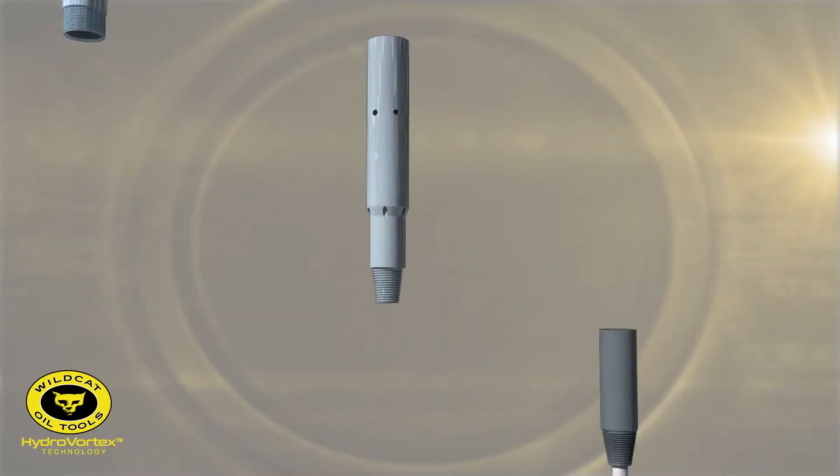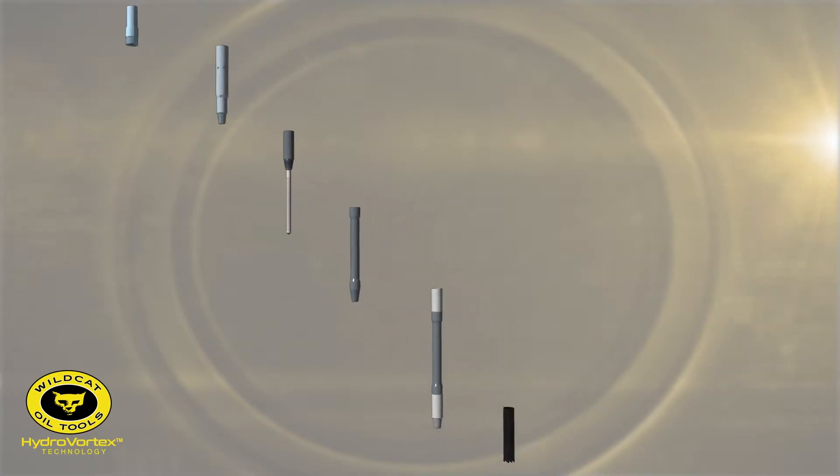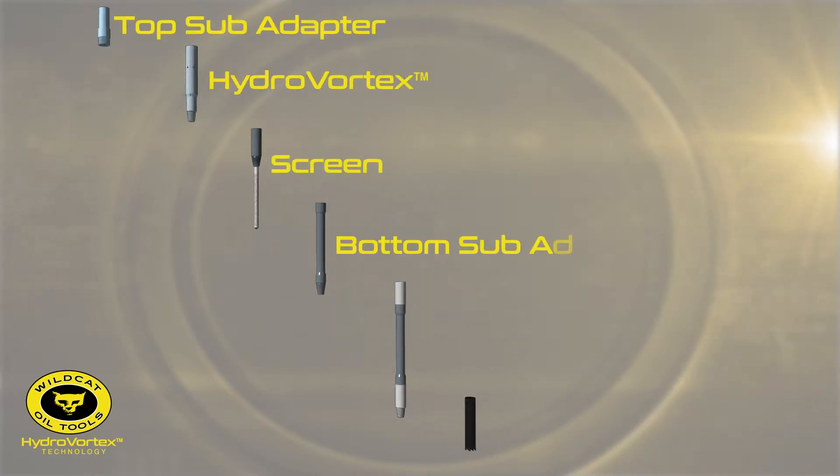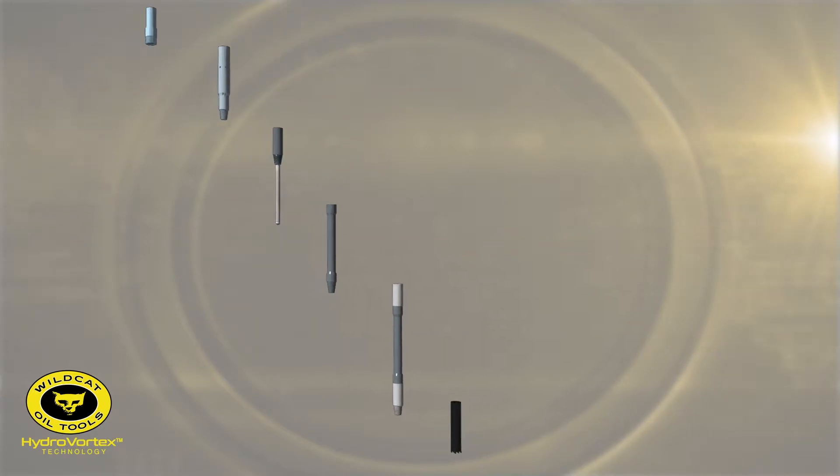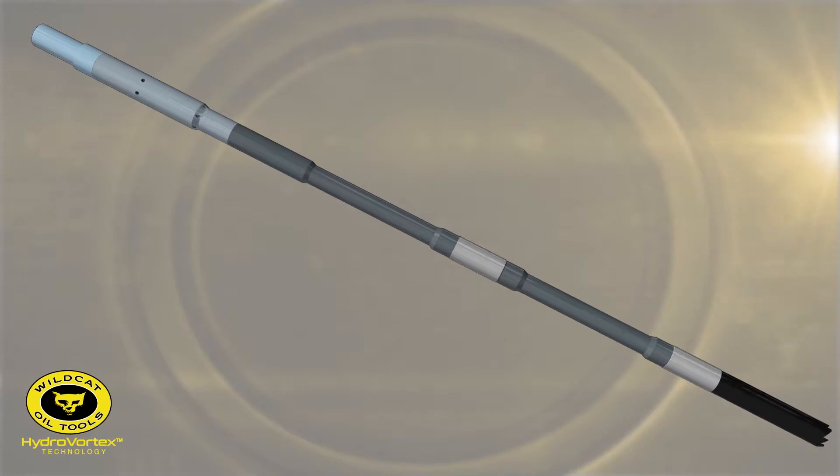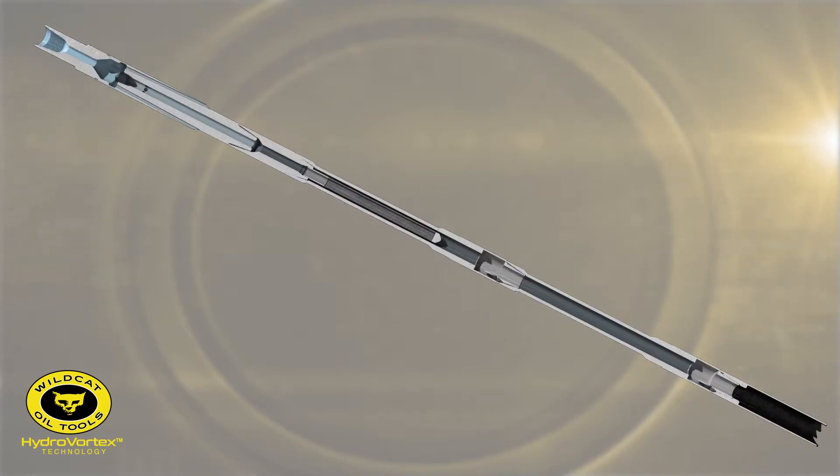The HydroVortex is installed in a Bottom Hole Assembly, or BHA, with a screen and a multiple joint debris collection chamber below it. The HydroVortex is suitable for vertical or horizontal wells and is targeted for wells with a total loss of circulation.